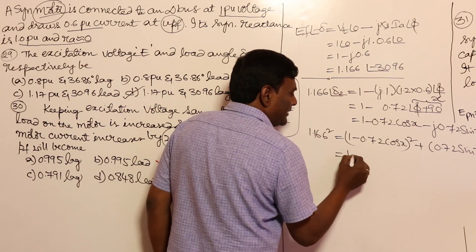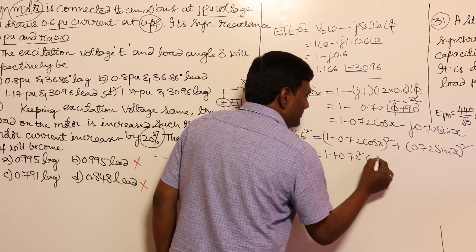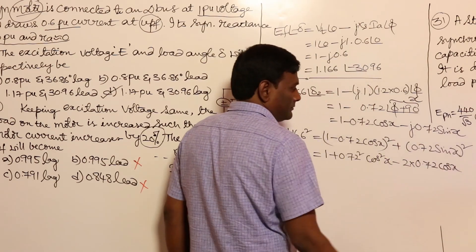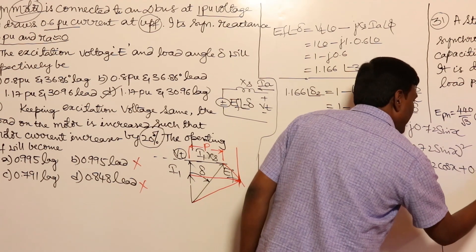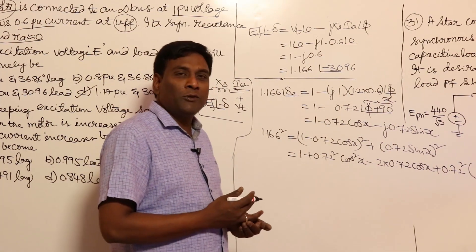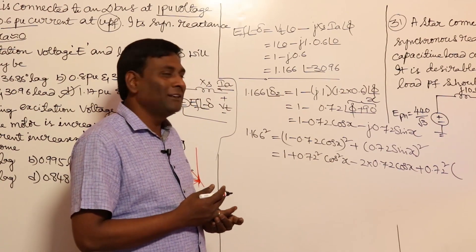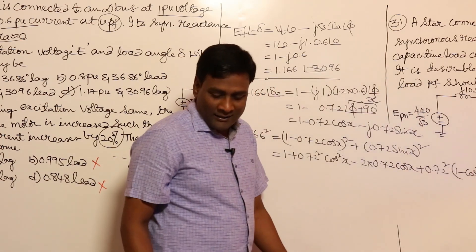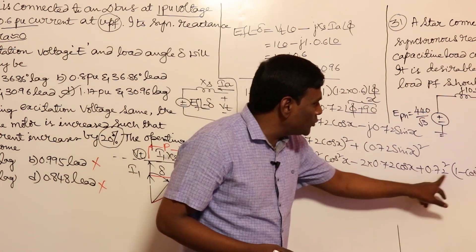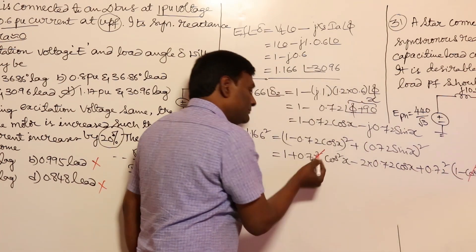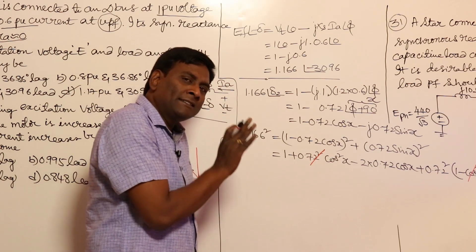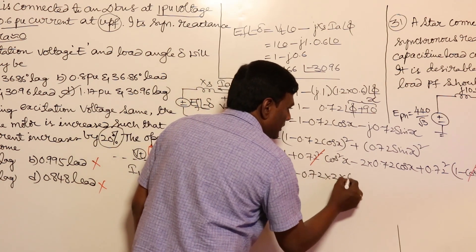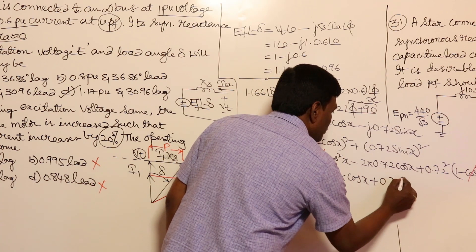Expanding: this is a² + b² − 2ab + 0.72²·sin²(x). Using sin²θ + cos²θ = 1, so sin²x = 1 − cos²x. Then 0.72²·cos²x terms cancel out. So we are left with: 1 − 2·(0.72)·cos(x) + 0.72² = 1.166². This is the logic — even in the next problem we develop the same equation and the same cancellation will occur.